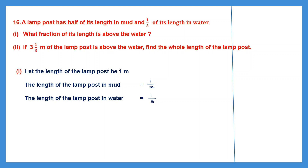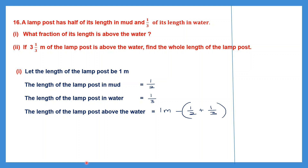Length of the lamp post in mud is 1/2 and in water is 1/3. The length above water equals the total length minus the sum of mud and water portions: 1 minus (1/2 plus 1/3). Let's work out 1/2 plus 1/3. The denominators are different, so we find the LCM of 2 and 3, which is 6. Converting: 1/2 becomes 3/6 and 1/3 becomes 2/6. So 3 plus 2 is 5, giving 5/6.